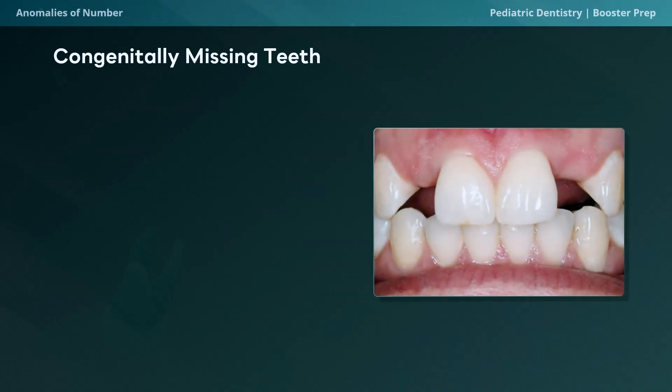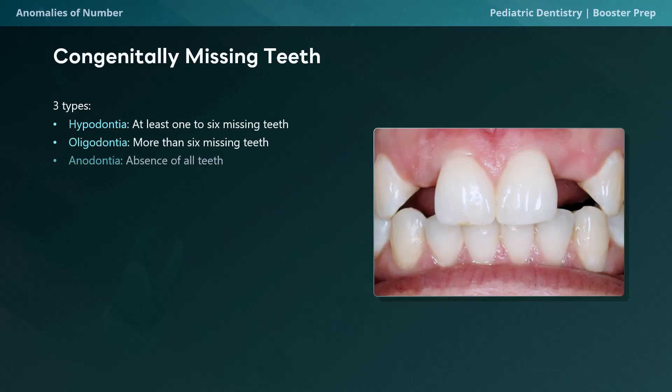Congenitally missing teeth is when we have fewer teeth in the mouth than we normally should. This can be divided into three types: hypodontia, oligodontia, and anodontia. Hypodontia is when we have one to six teeth missing. Oligodontia is when there are more than six missing teeth. And anodontia is the absence of all teeth — this is rare and a very severe condition that requires special dental attention.